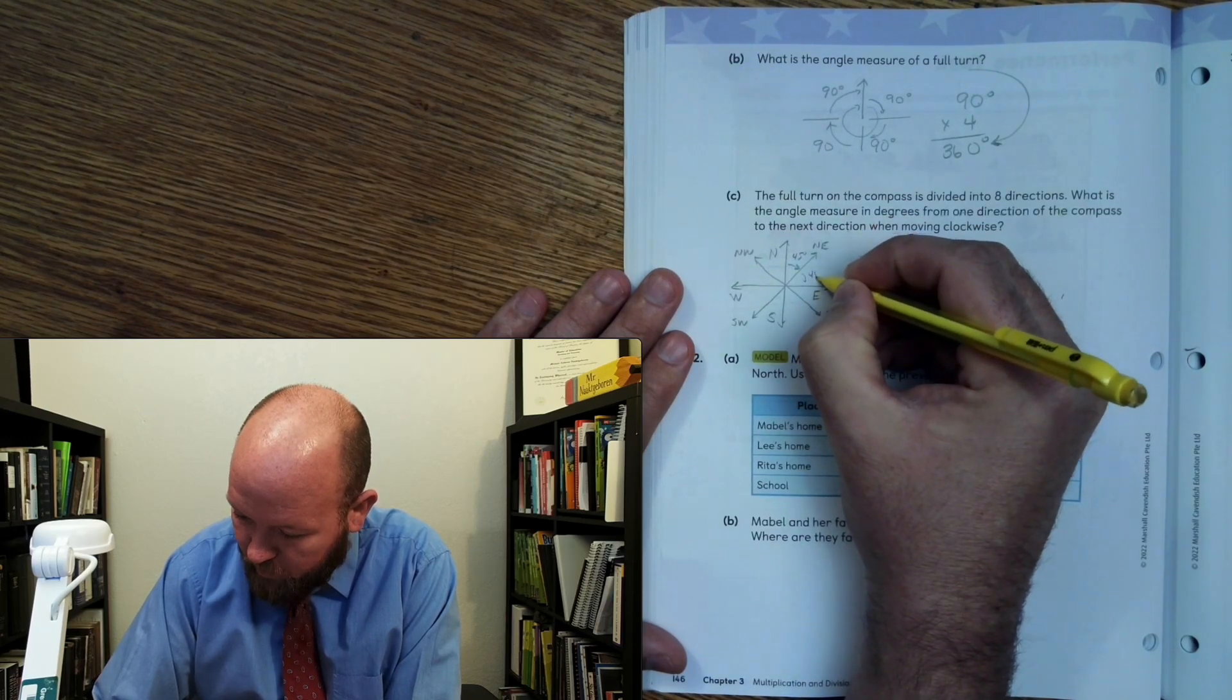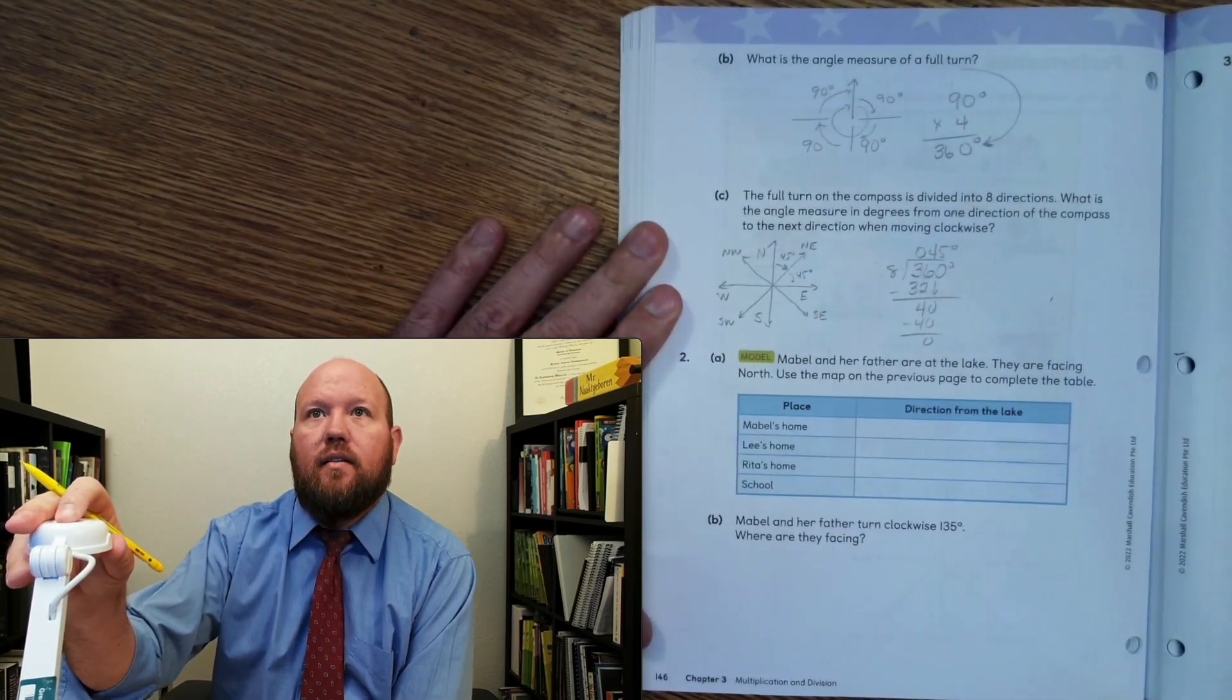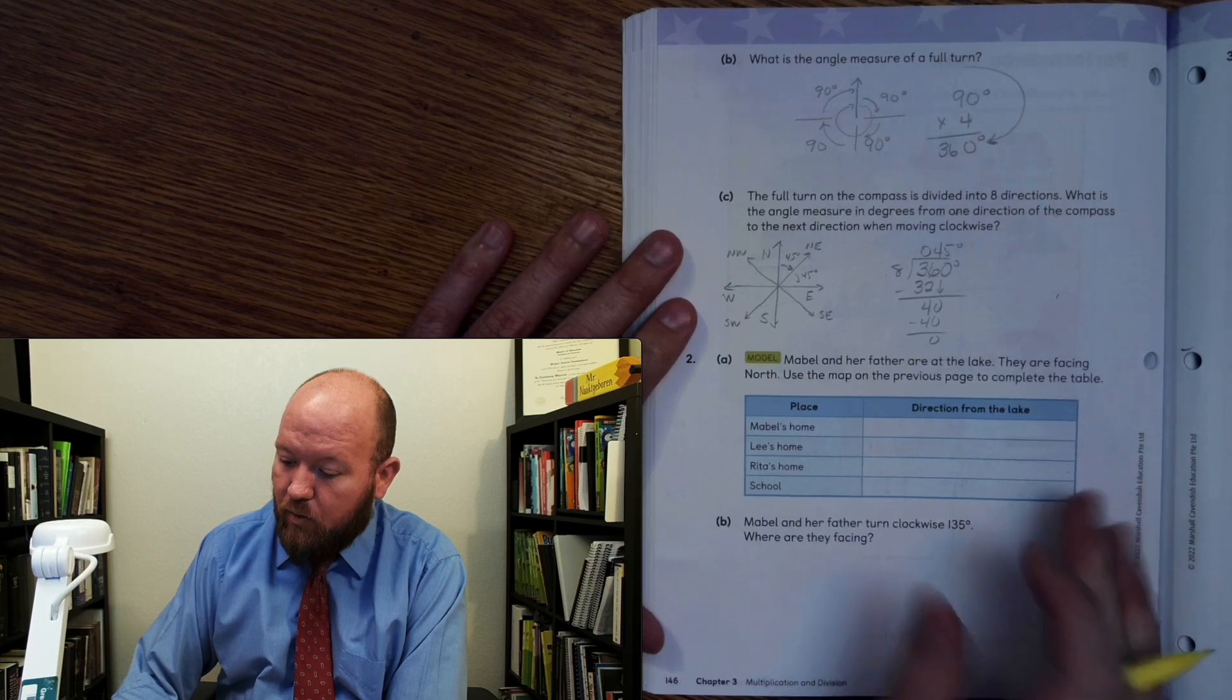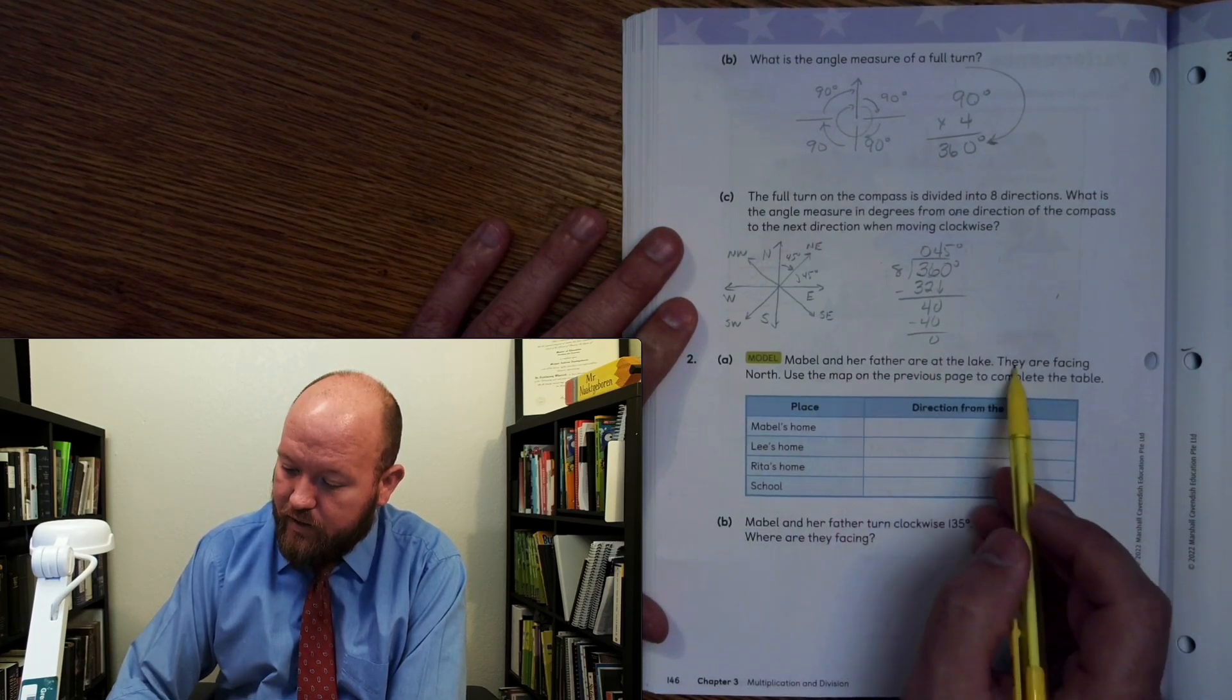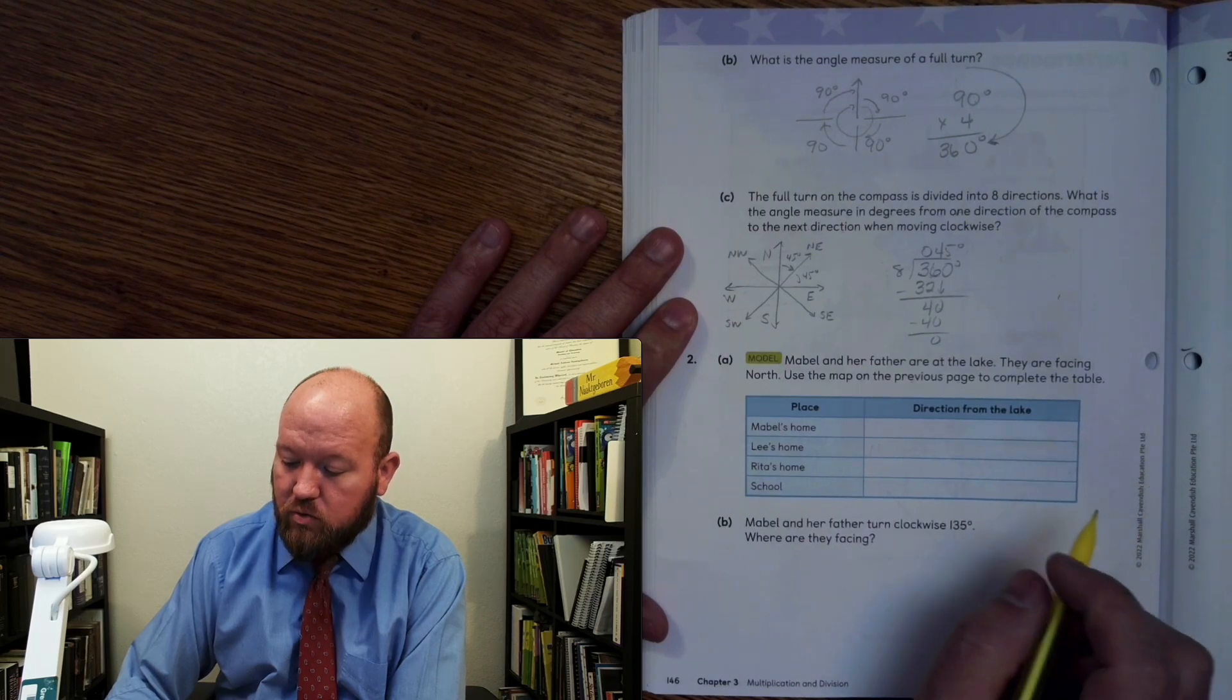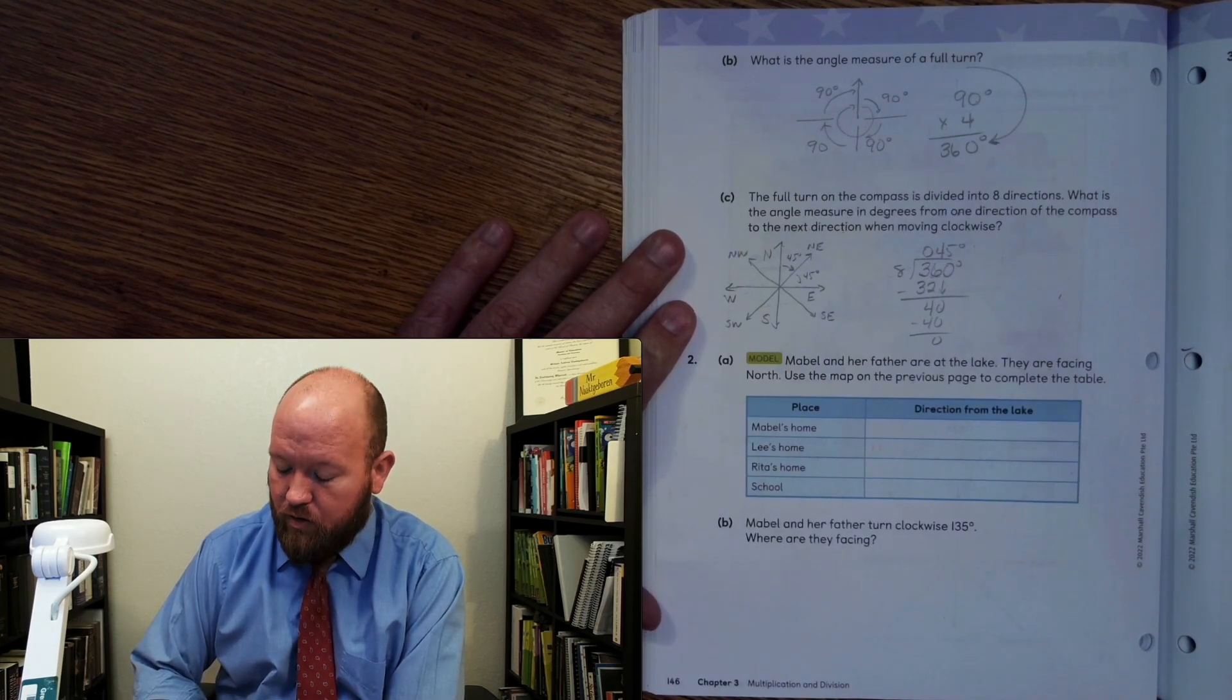This is 45 degrees each time. All right, all the way around that compass. There you go. It's a little bit easier to see. All right. Now, Mabel and her father are at the lake. They are facing north. Use the map on the previous page to complete the table. All right. So direction from the lake. So what we're going to do is we're going to find the cardinal direction or the compass direction and how many degrees they are from that.